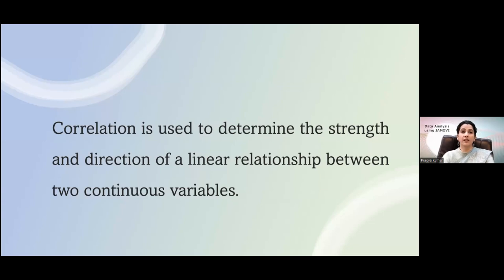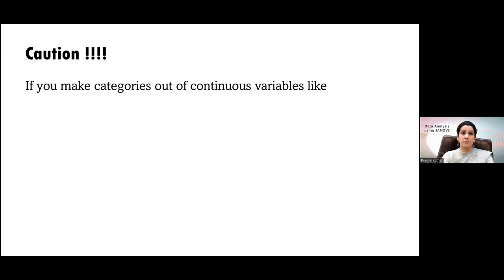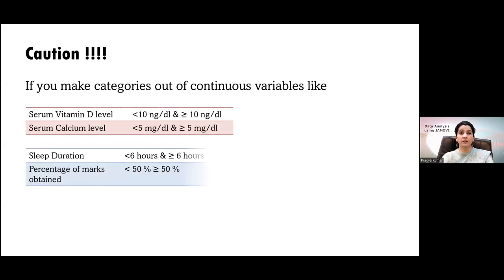Correlation is used to determine the strength and direction of a linear relationship. There are two things: a sign — plus or minus — and a value. The value tells you about the strength of association, and the sign tells you about the direction. However, if you are making categories of a continuous variable, as we did yesterday using the transform option, you cannot apply Pearson's correlation.